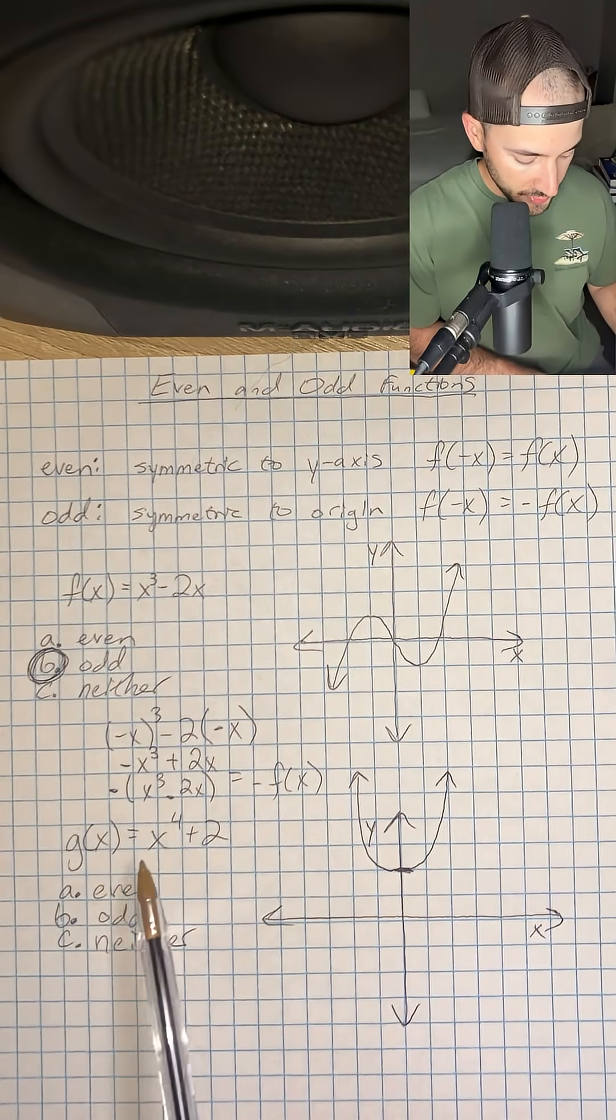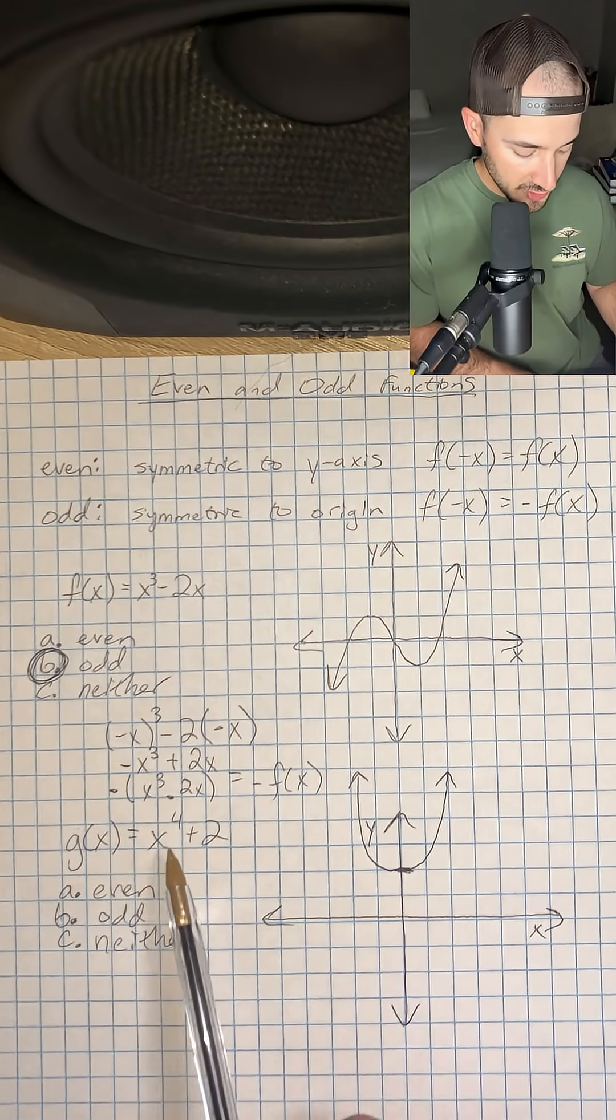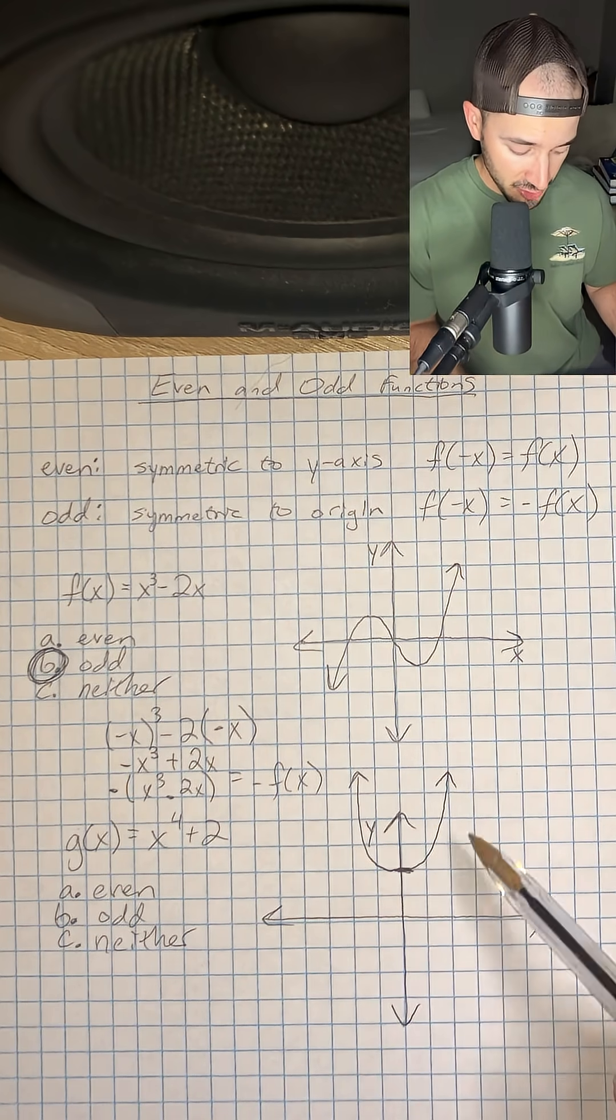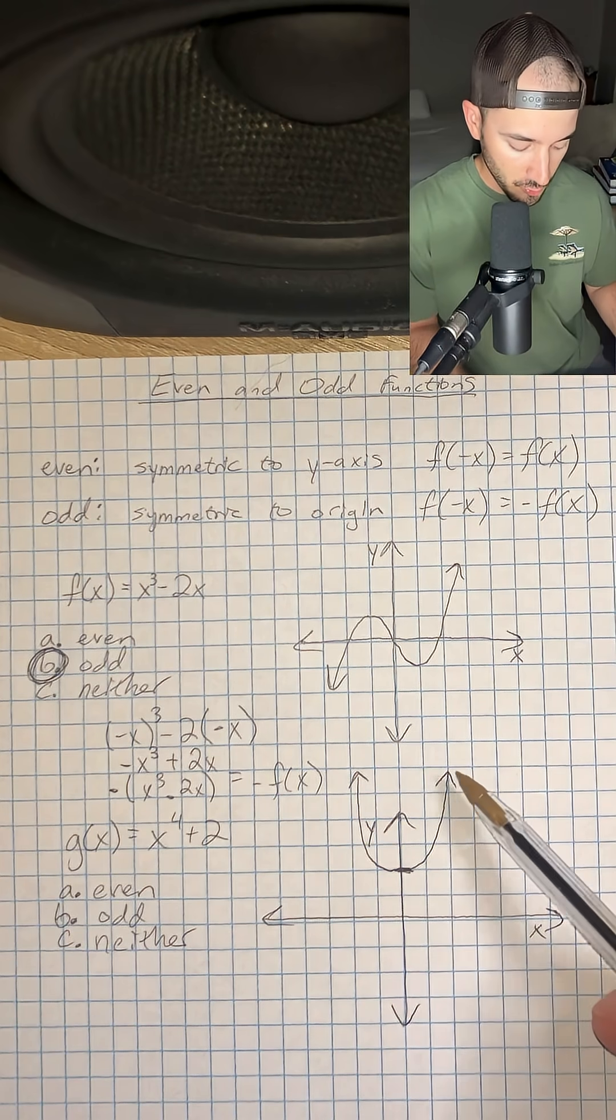We have g of x is equal to x to the fourth power plus 2. This graph, I'm 99% sure, is symmetric with respect to the y-axis.